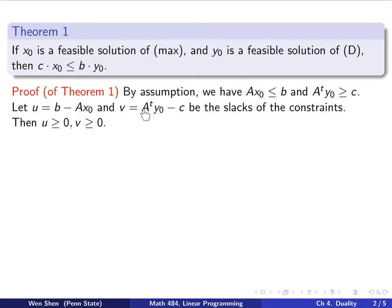These will be the slacks of the constraint for the max problem and for the dual problem. Because this is feasible solution, then b minus Ax0 will be greater than or equal to zero, so u is greater than or equal to zero. By similar reason, v is greater than or equal to zero also.